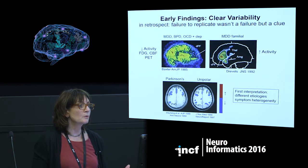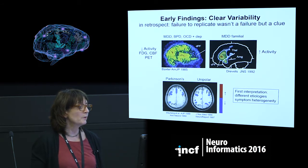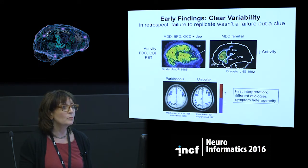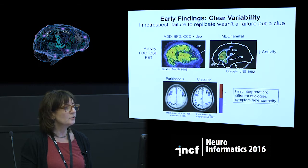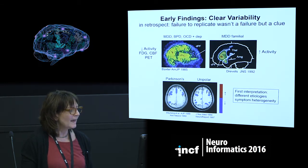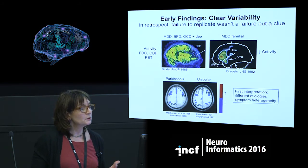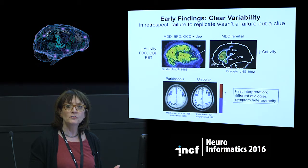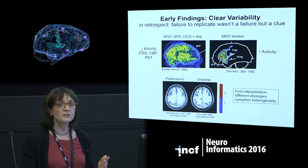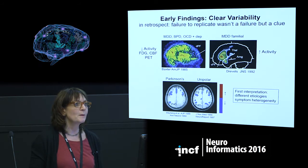Going back 30 years, you could put depressed people into a first-generation PET scan and actually see with fair reliability and reproducibility low frontal metabolism, low frontal blood flow — in patients with unipolar, bipolar, obsessive compulsive disorder, Parkinson's, Huntington's, Alzheimer's, and seizure patients with depression. It looked as though there was a replicable finding in the frontal lobe, until Wayne Drevitz reported that some depressed patients — equally depressed — didn't have low frontal activity; they had high frontal activity. Suddenly we have a conundrum, but failure to replicate isn't failure — it's a clue.